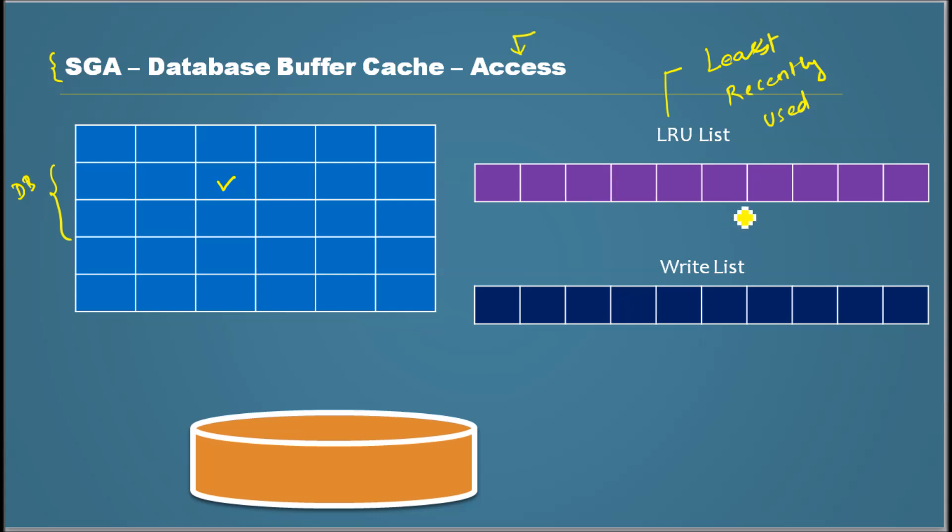And then in LRU, somewhere in the middle it marks that buffer. Let's say there is a number for this buffer - 1, 2, 3, 4, 5, 6, 7, 8, 9. So buffer 9 gets marked here.